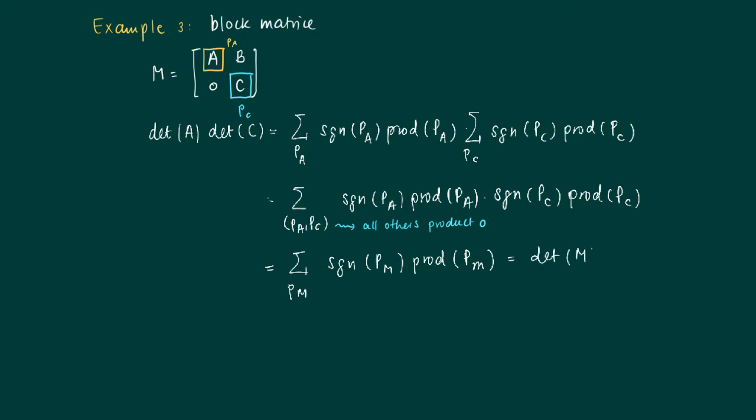What is written on the second line equals the sum over all patterns on M of the sign of P times the product of P with respect to M. This equals the determinant of M. So if we have a block matrix in this sense, the determinant of M is simply the determinant of A times the determinant of C.